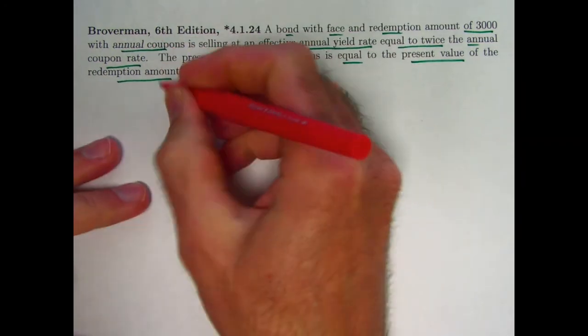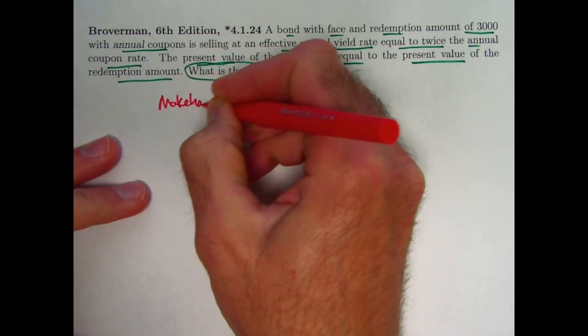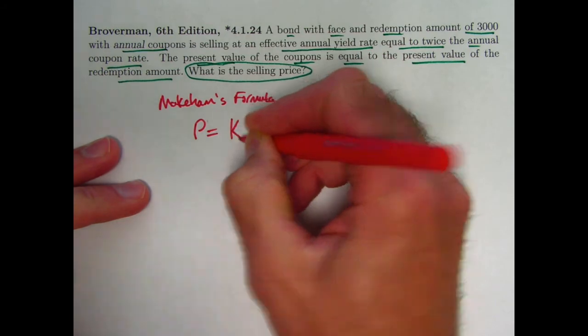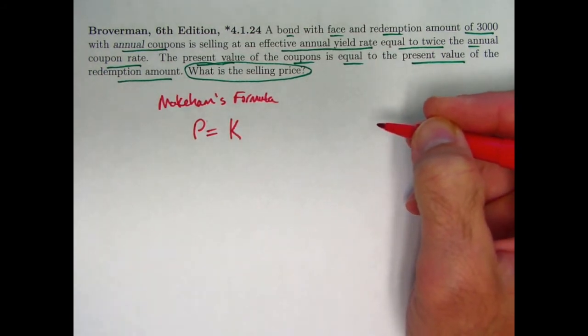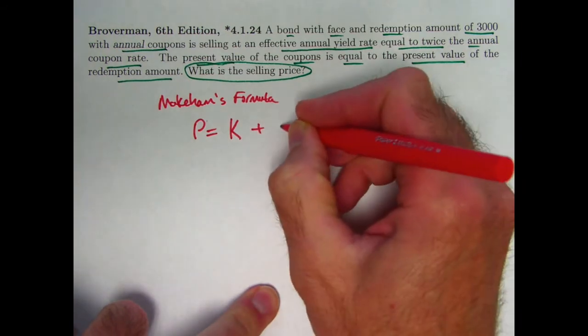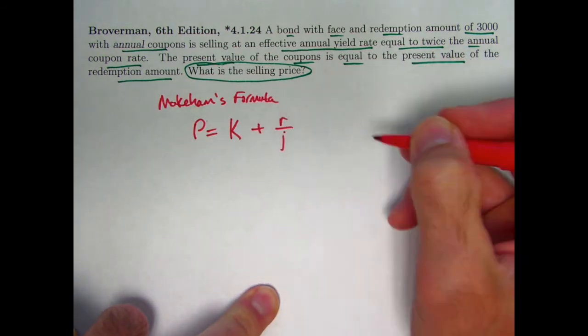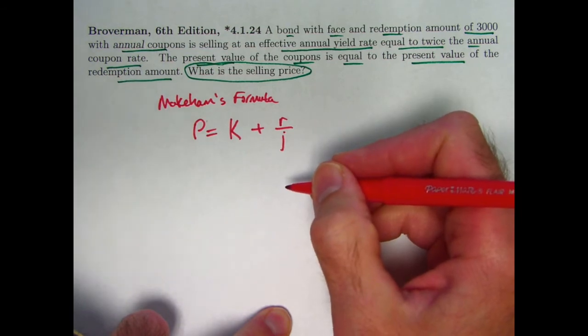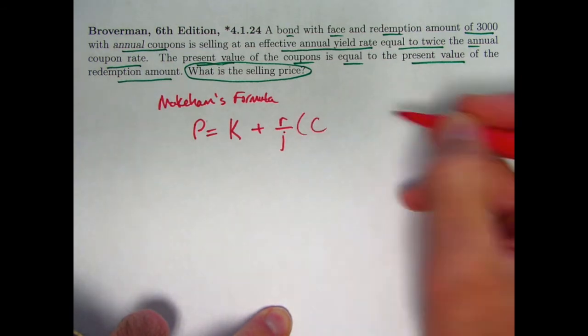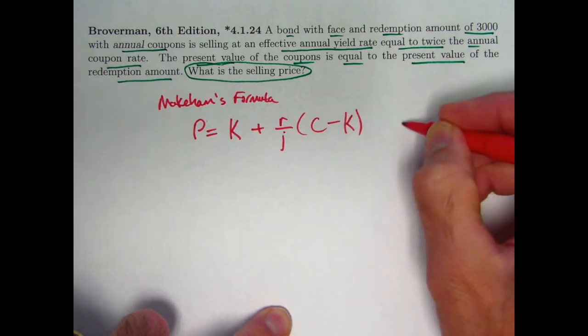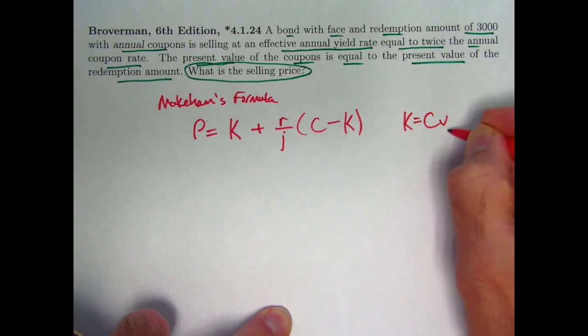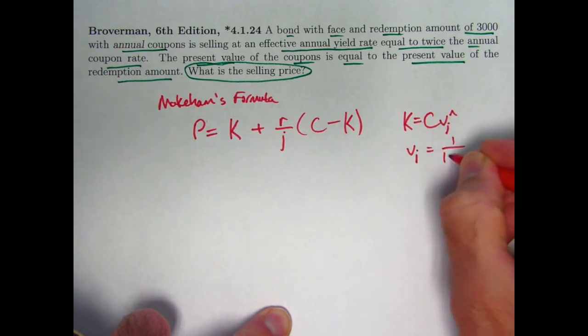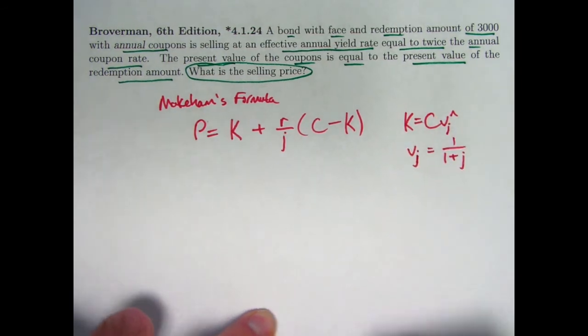So what did Makeham's formula say? Makeham's formula says the selling price P is equal to K, where K was the present value of the redemption amount, plus R over J, R being the periodic, in this case annual coupon rate, J being the periodic, in this case annual yield rate, times in parentheses C, the redemption amount, minus K, where again K is the discounted value of the redemption amount C times V sub J to the N, where V sub J is the discounted value of 1 over 1 plus J.